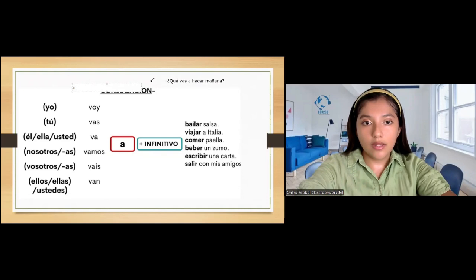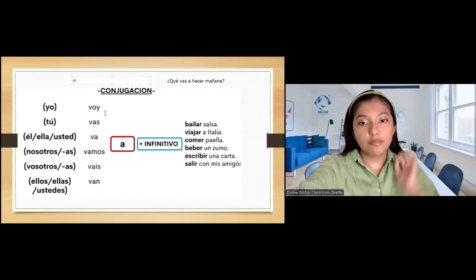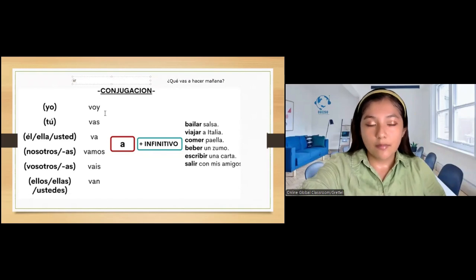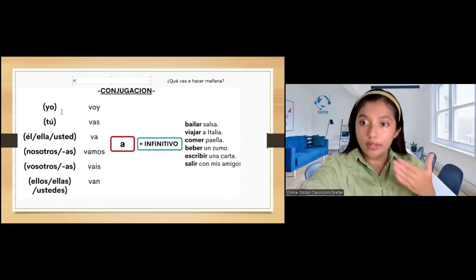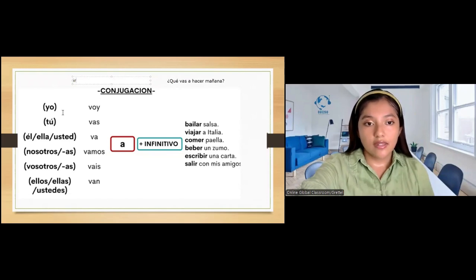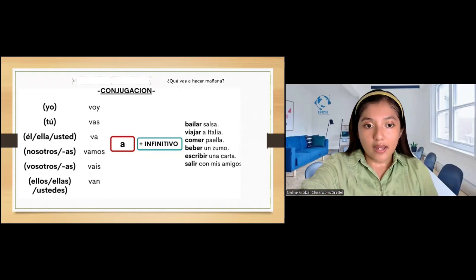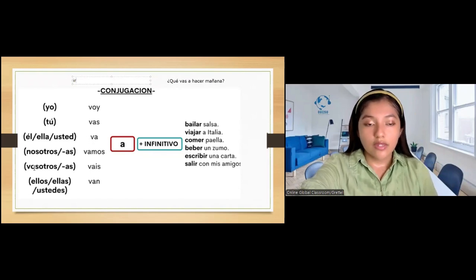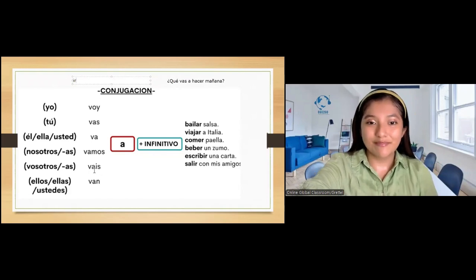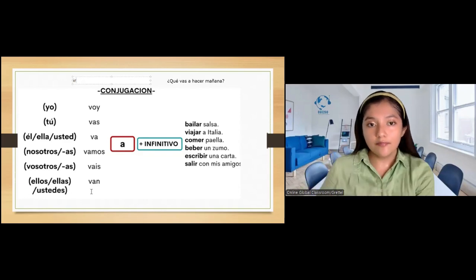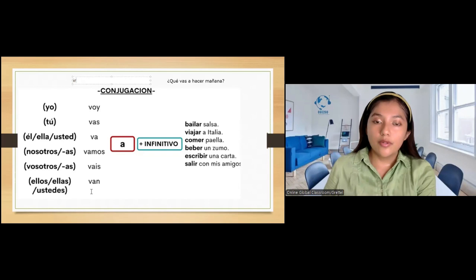And here we have the conjugations with each pronoun. For example, por ejemplo, yo voy. Tú vas. Él, ella, usted va. Nosotros, nosotras vamos. This one is Spanish from Spain. Y ellos, ellas y ustedes van.